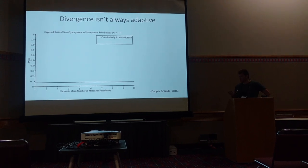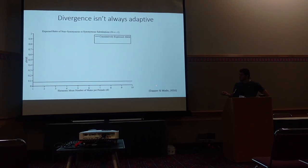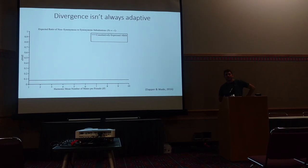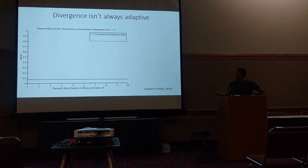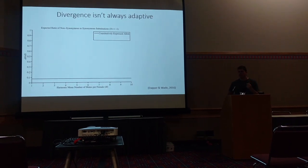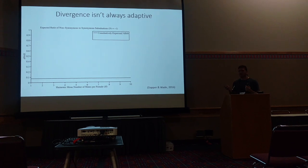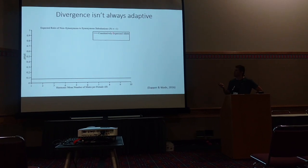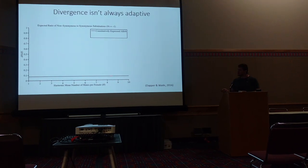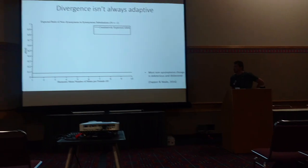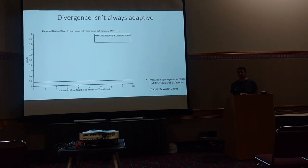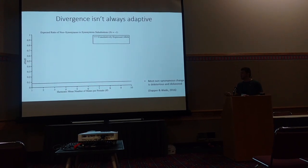But that is only one possibility. There's a great paper that came out last year — a bit of theory by Dapper and Wade — that makes us step back and reevaluate this. Here we're considering divergence, starting with constitutively expressed genes: things expressed in both sexes, not involved in reproduction. As a nearly neutral theorist, non-synonymous change is going to be disfavored, so divergence just slowly ticks along.